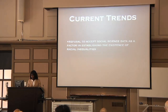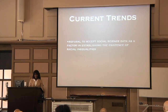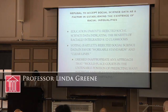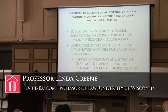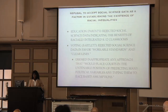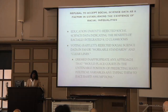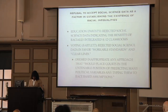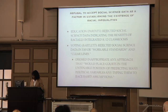Another trend in the Roberts Court is the refusal to accept social science data as a factor in establishing the existence of racial inequalities. In the Parents case, the court rejected social science data demonstrating the benefits of education in racially integrated classrooms. In the voting rights case in Bartlett, it rejected social science data demonstrating the existence of white racial block voting in favor of a workable standard and a clear line. It said that any approach involving consideration of this data would place the courts in the untenable position of predicting many political variables and tying them to race-based assumptions.